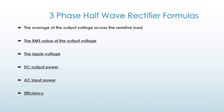Three phase half wave rectifier formulas. The key quantities are: the average output voltage across the resistive load, the RMS value of the output voltage, the ripple voltage, the DC output power, the AC input power, and the efficiency. All these formulas are given on the next slides.